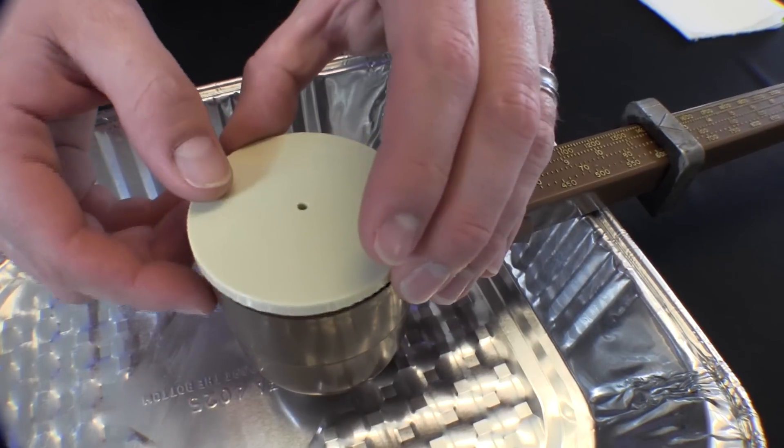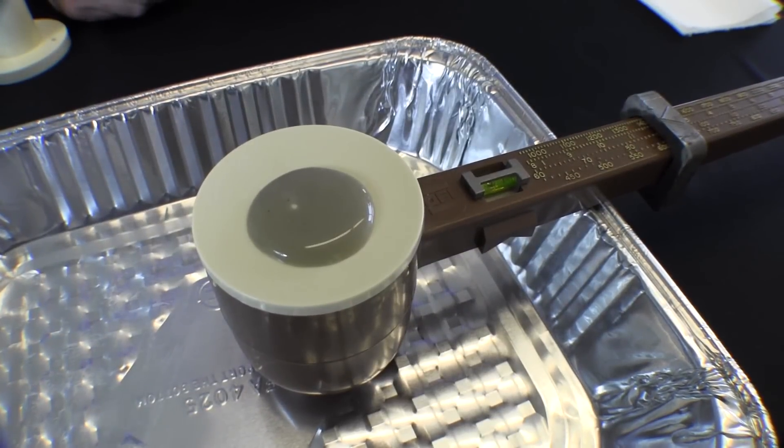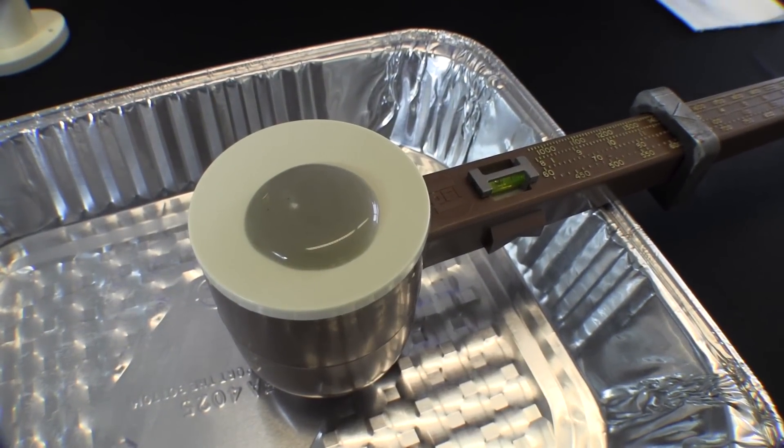Next the lid is placed on the top of the cup. It is important to have bentonite drilling fluid come out of the top hole. This ensures that the cup is completely full.